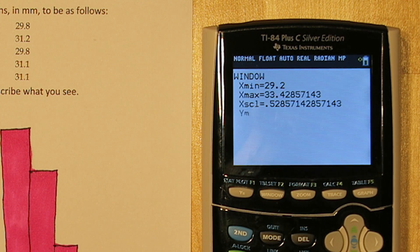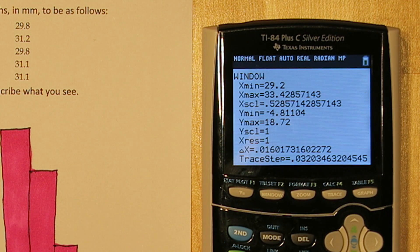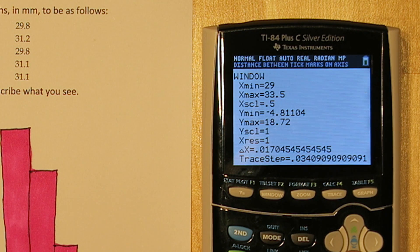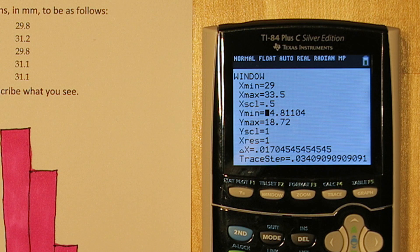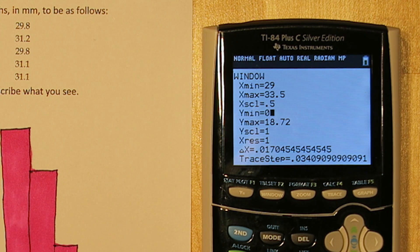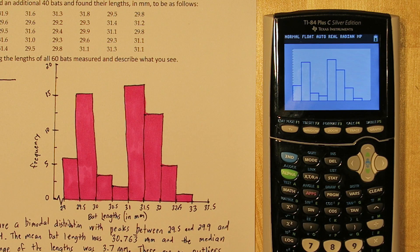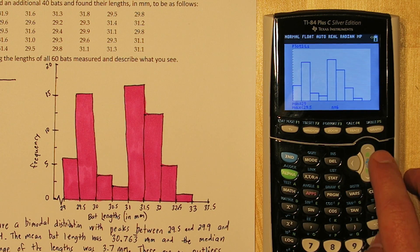If you push the window button, let's change the minimum to match our X axis, which is at 29. Our maximum, let's match our X axis as well. Now where it says X scale, we went by 0.5. So let's do that on here too. 0.5. For Y minimum, we could set it equal to 0. And for Y maximum, it needs to go up to at least 16. But let's go to 20. So it matches our graph very closely. Now when we press graph, we can see our histogram matches the one we drew. And we can confirm this by pushing trace and seeing that our classes now match.